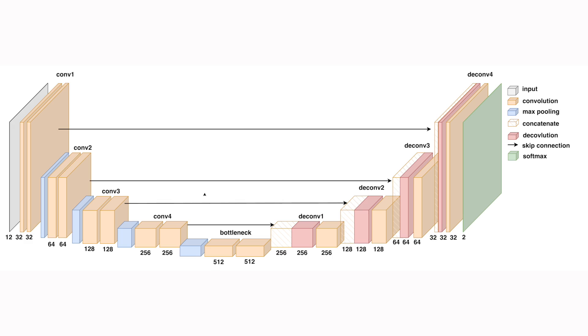Things get even more complicated with algorithms like neural networks. Unet, a convolutional neural network used for image segmentation, has over 30 million parameters — our regression model only had three. It's simply not possible for a human to comprehend how a model like Unet works by looking at the parameter weights alone. For many use cases, a well-structured linear model is a far better option. However, some problems cannot be solved by a simple model. In that case, we must turn to model agnostic methods to interpret our models.